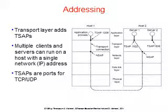Addressing. When an application process wishes to set up a connection to a remote application process, it must specify which one to connect to. Connectionless transport has the same problem regarding where each message is sent. The method normally used is to define transport addresses, called TSAPs (transport service access points), to which processes can listen for connection requests. On the internet, these endpoints are called ports. The analogous endpoints in the network layer are called NSAPs — network service access points — and IP addresses are examples of NSAPs. Page 509 illustrates the relationship between NSAPs and TSAPs.